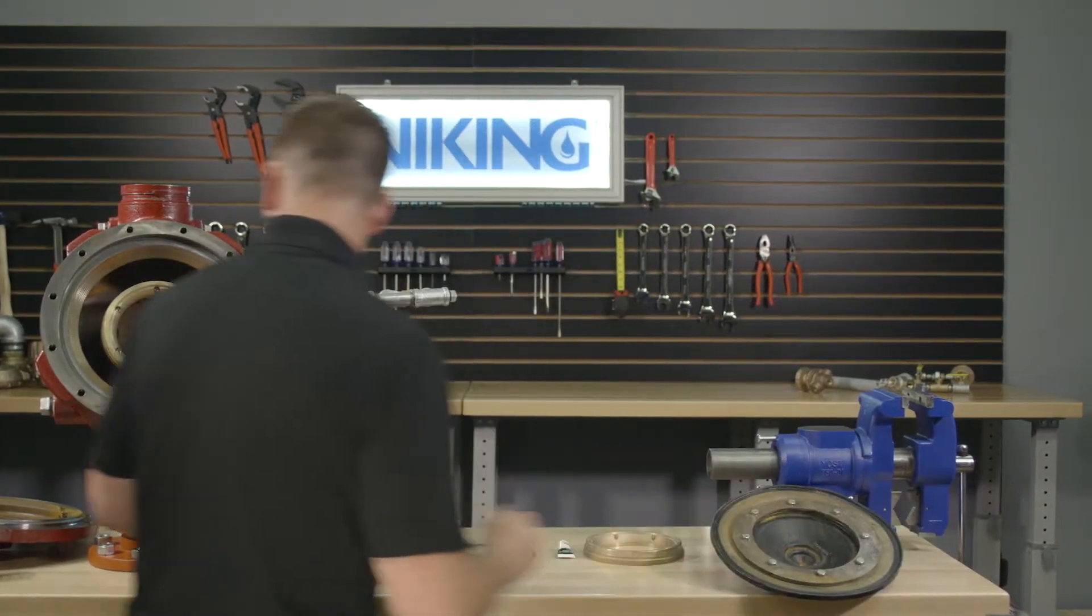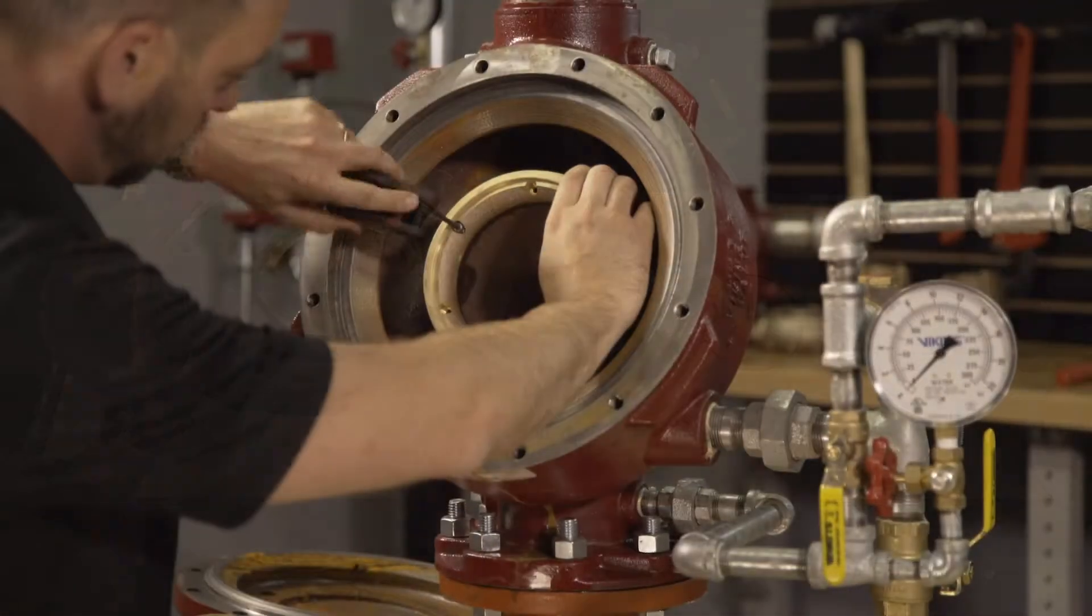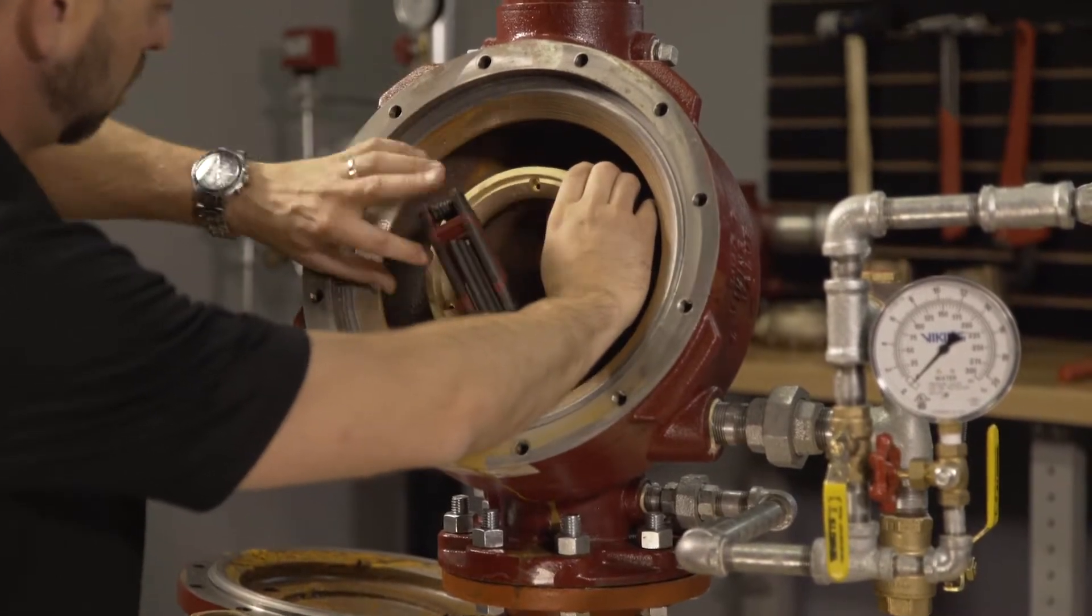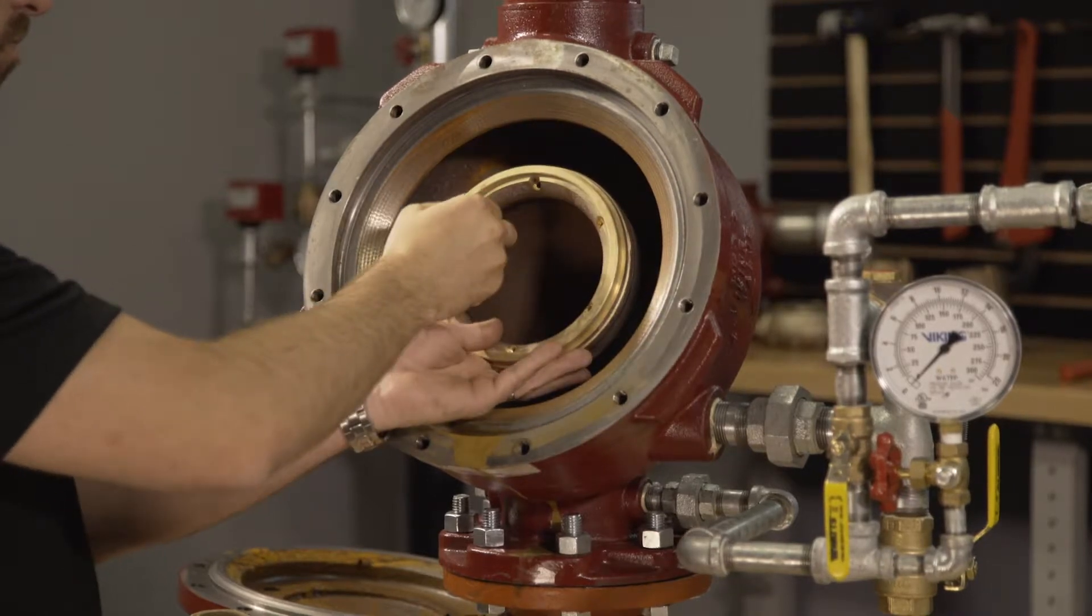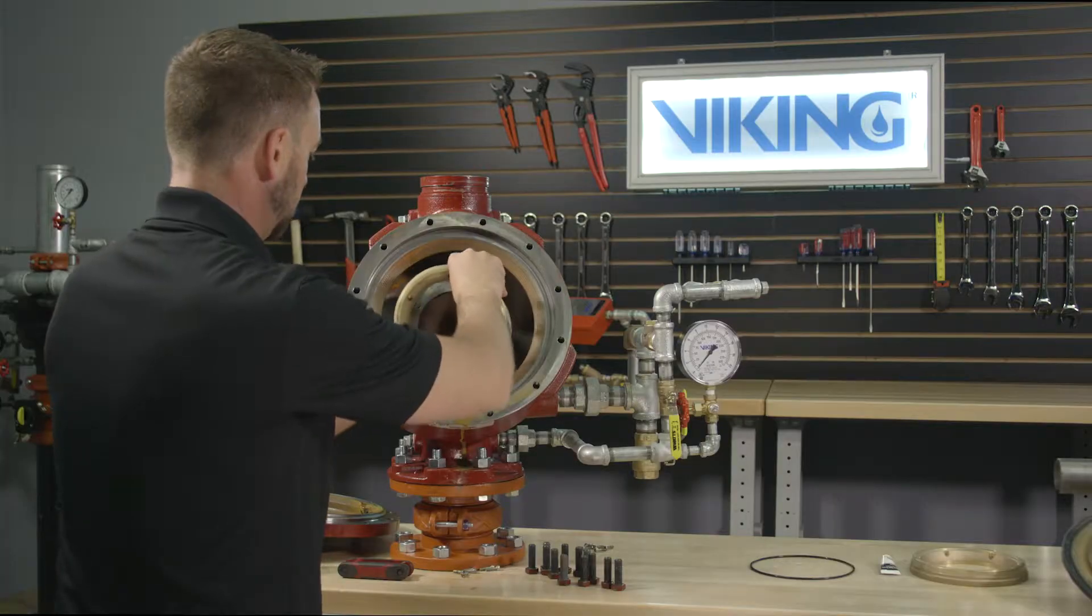With the clapper assembly now removed, the valve seat is now exposed. To remove the seat, remove each of the screws that are connecting the seat to the valve body. With the screws removed, we can now remove the seat and the O-ring from the valve.